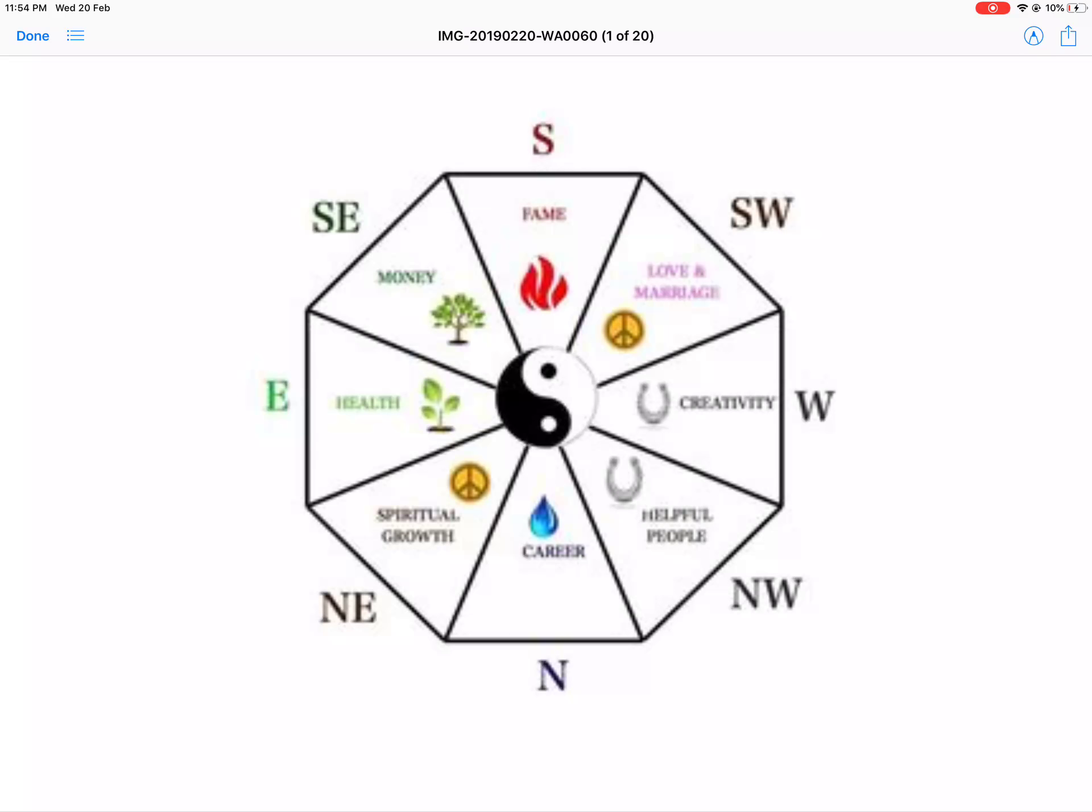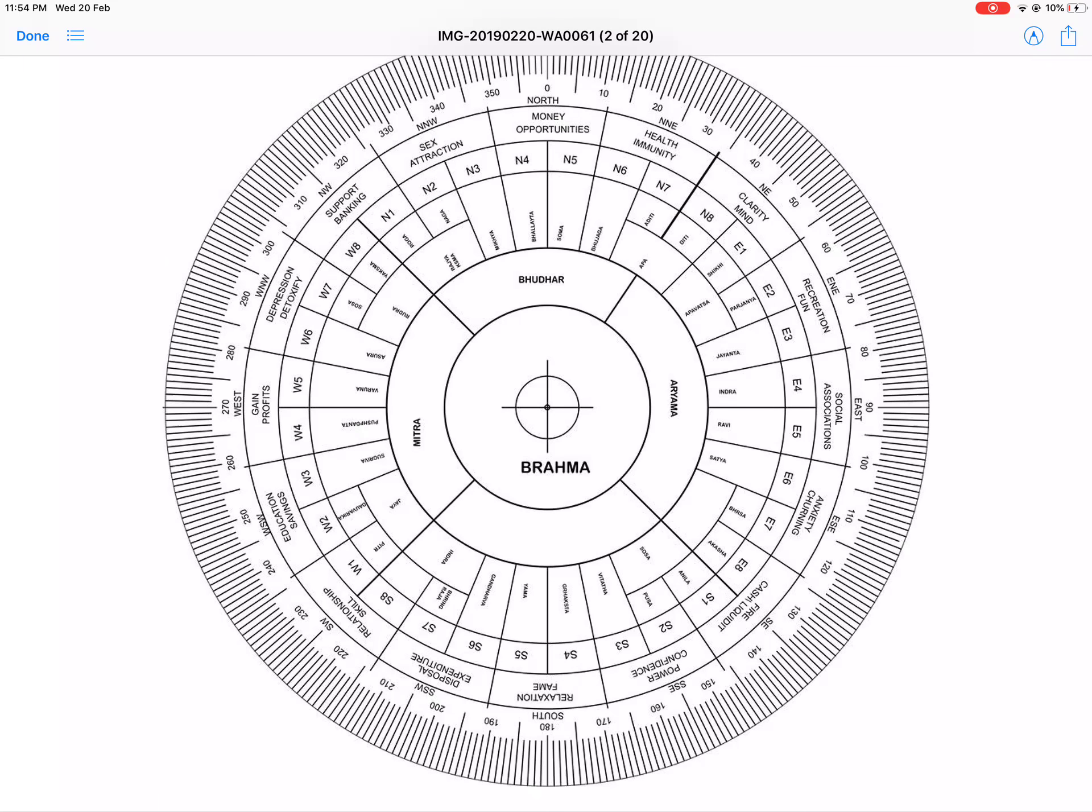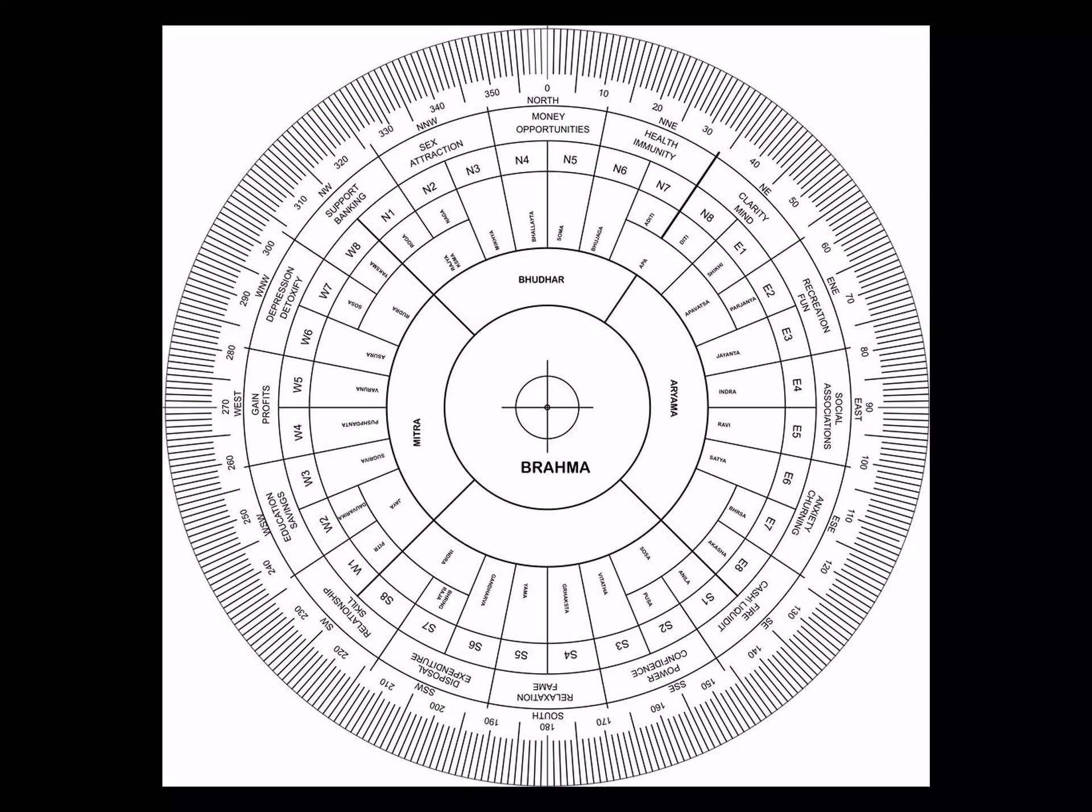You will understand when I go through the Vastu Chakra that I use, which is developed by Mahavastu team. Now let me take you to the Vastu Chakra that I use in my consulting. Here you will see 16 directions or zones we call, starting with north, north of northeast, northeast, east of northeast, east, which is between 80 and 100 degrees approximately, then all the way up to north of northwest.